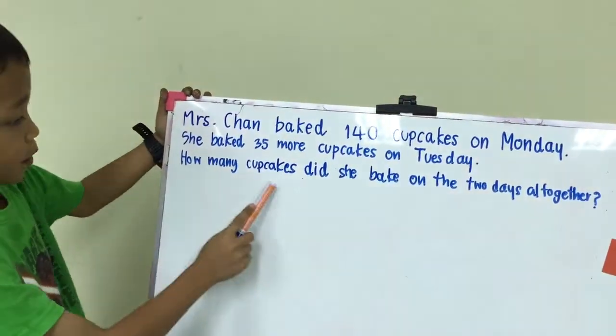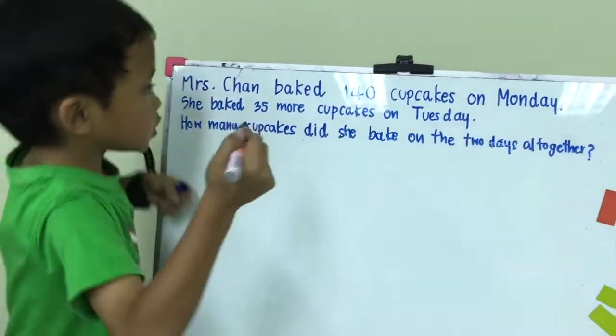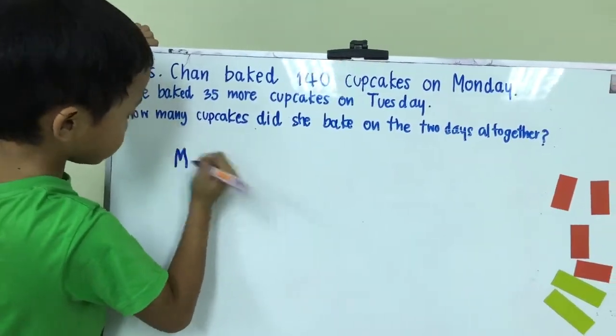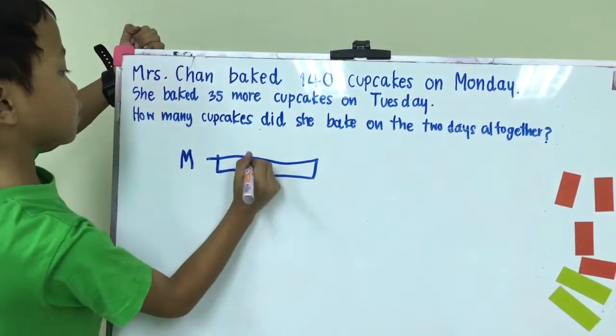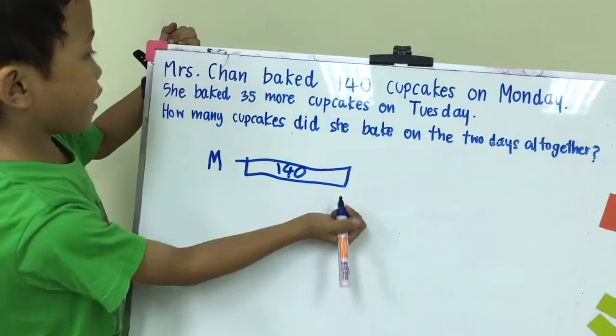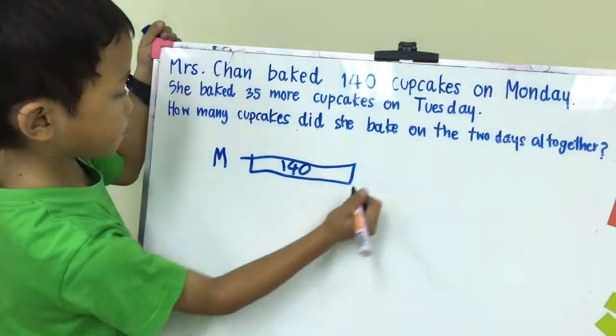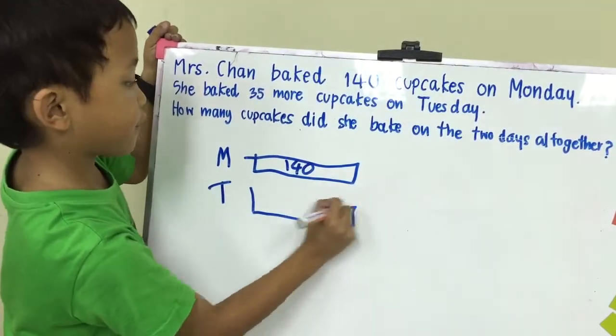How many cupcakes did she bake on the two days altogether? First, Miss Shane, I'm going to show you cupcakes on Monday. She baked 35. Miss Shane, she baked 35.